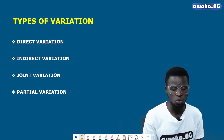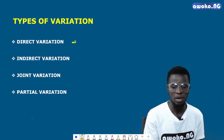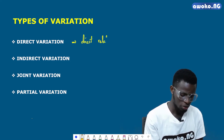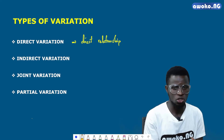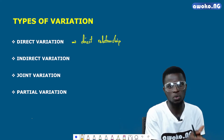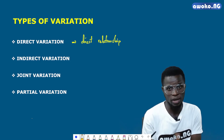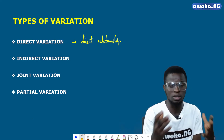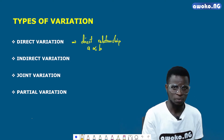The first type is direct variation. Just like the name implies, direct variation shows the direct relationship between quantities — how one quantity, let's say quantity X, varies directly as another quantity Y, or any other quantity such as A, B, or C. Mathematically, we can say that quantity A varies directly as quantity B.